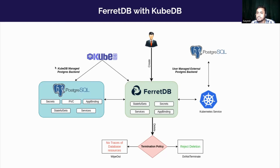For the KubeDB managed PostgreSQL backend option, when a user creates a FerretDB resource, KubeDB deploys a FerretDB custom resource object in the Kubernetes cluster, as well as a PostgreSQL custom resource object. Along with both custom resources, KubeDB also provisions a secret for FerretDB-PostgreSQL authentication, a PVC for storage, app binding, stateful sets, and a service for the PostgreSQL database. For FerretDB itself, a stateful set, secrets, service, and app binding are also provisioned. KubeDB internally connects PostgreSQL with FerretDB.